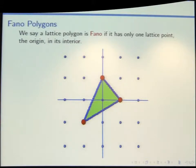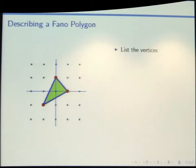You could take a lattice polygon that has some other lattice points in the interior, but then you might as well just change coordinates and put the interior lattice point at the origin. And if you wanted to write down how to make a Fano polygon, well, you could list the vertices.